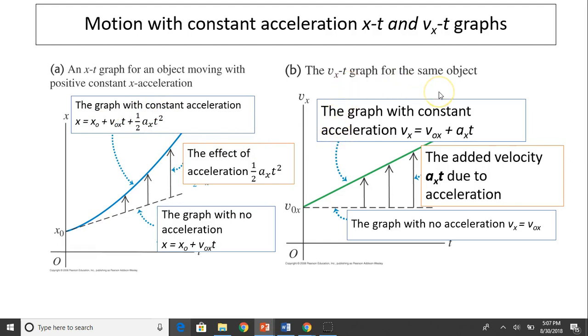The vt graph for the same object, since acceleration is constant, is a straight line with constant slope. The slope should be acceleration. This graph also has three parts. First, the dashed line means the graph with no acceleration, so vx is just a constant. When you have acceleration, this part is the velocity change due to acceleration. As a result, the graph with constant acceleration is the part that has no acceleration plus the effect of acceleration.